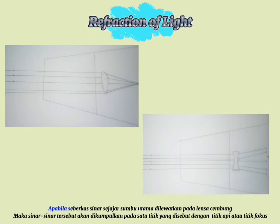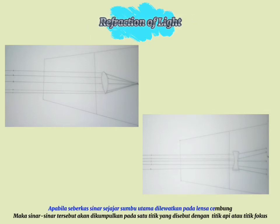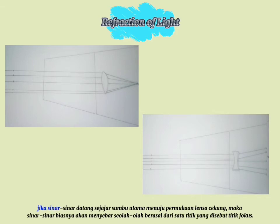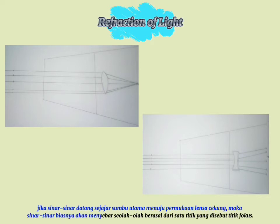When a beam of rays parallel to the main axis is directed toward the convex lens, the rays will be collected at a point called the focal point. If the rays come parallel to the main axis towards the surface of the concave lens, then the refracted rays will spread out as if they come from a point called the focal point.